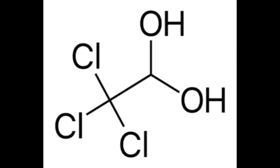It was discovered through the chlorination, or halogenation, of ethanol in 1832 by Justus von Liebig in Gießen. Its sedative properties were first published in 1869 and subsequently, because of its easy synthesis, its use was widespread. It was widely used recreationally and misprescribed in the late 19th century.